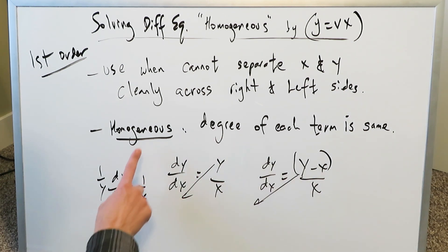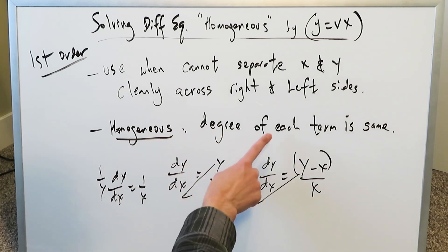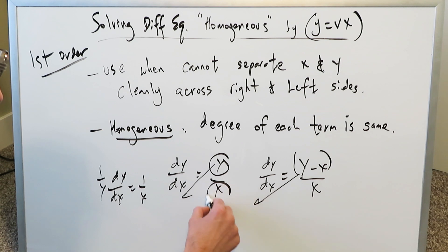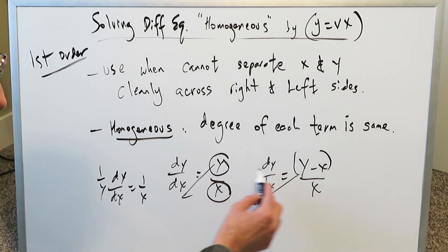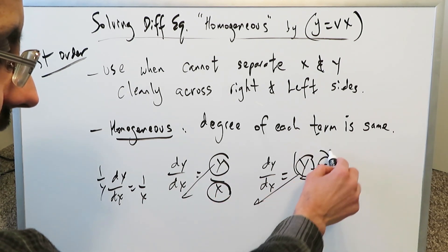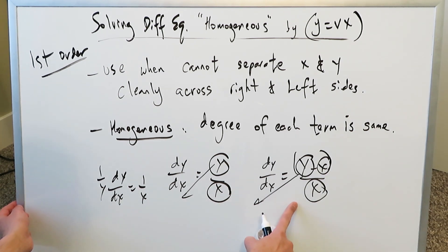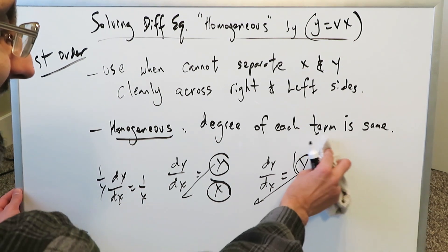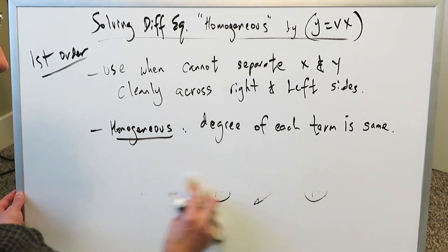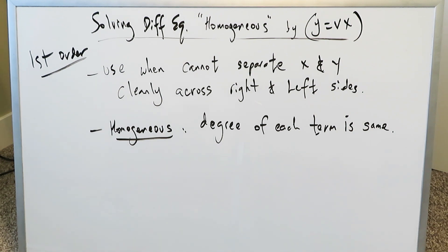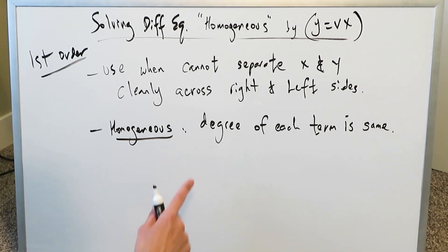These are homogeneous differential equations. What does homogeneous mean? The degree of each term is the same. The degree of each term is 1 in terms of exponents — these are all homogeneous. The first example could have been done by separation of variables, but the second will require the y equals vx technique. Once you utilize the y equals vx technique, in the end you will still be utilizing separation of variables — it's just used to get things started.